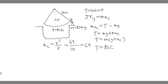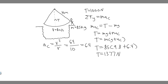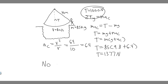Now we can find the tension: T = 85 × (9.8 + 6.4) = 85 × 16.2 = 1377 newtons. The vine can only withstand 1000 newtons, but the archaeologist is applying 1377 newtons — so the vine breaks. The answer is no, he does not make it across the river. He's applying too much force and the vine will snap.